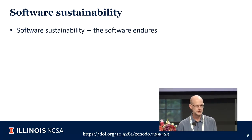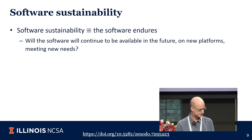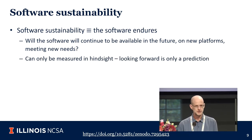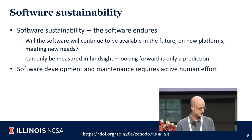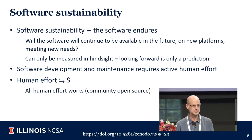If we think about software sustainability as the way to address these things: I'm defining software sustainability as the fact that software endures. The question you could ask is: will the software continue to be available in the future on new platforms meeting new needs? You can only measure this in hindsight — you can't say software is sustainable, you can only say software has been sustained. We can do things we think will make software sustainable, but we don't actually know until time passes.